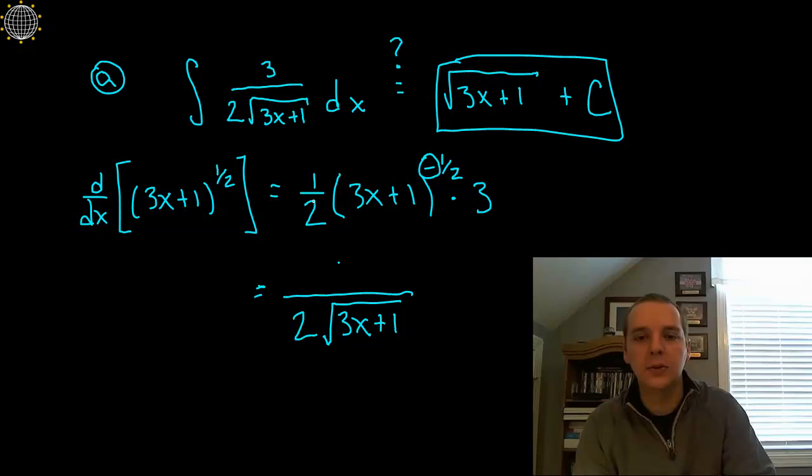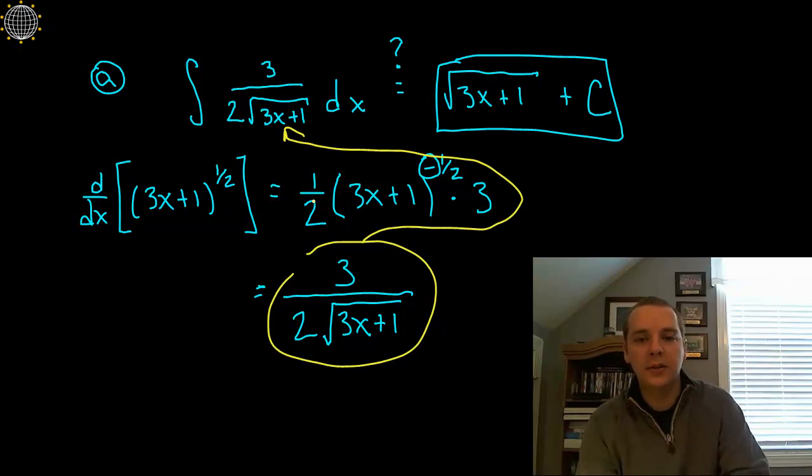And then the one half power would make a square root, and then we'd still have this 3 up here in the numerator. And so if we compare this with our original integrand right here, we say hey yeah it's the same thing. So without a shadow of a doubt this is correct. This has to be the correct answer.